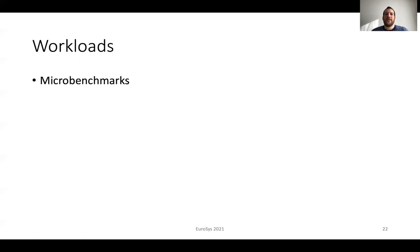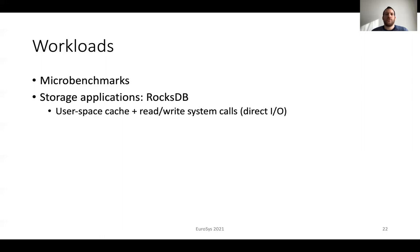For experimental analysis we use microbenchmarks to show a targeted comparison with Linux memory mapped IO. For storage applications we use RocksDB, a state-of-the-art persistent key-value store from Facebook. The common configuration is to use a user space cache and read-write system calls to interact with storage devices. RocksDB also provides an option to use memory mapped IO; in this case we use Linux EMAP and Akila.